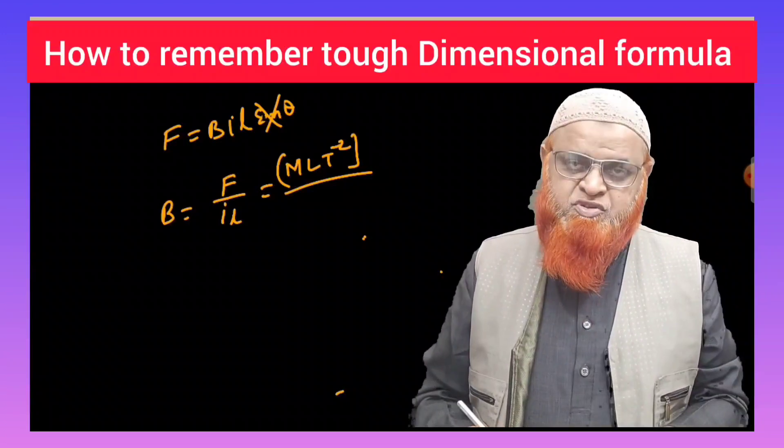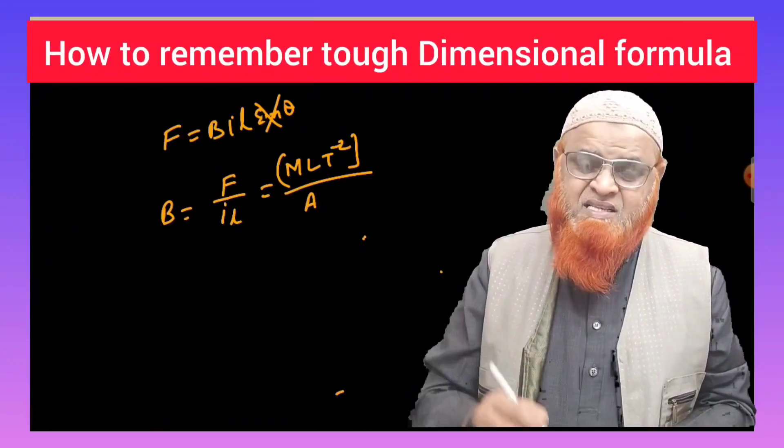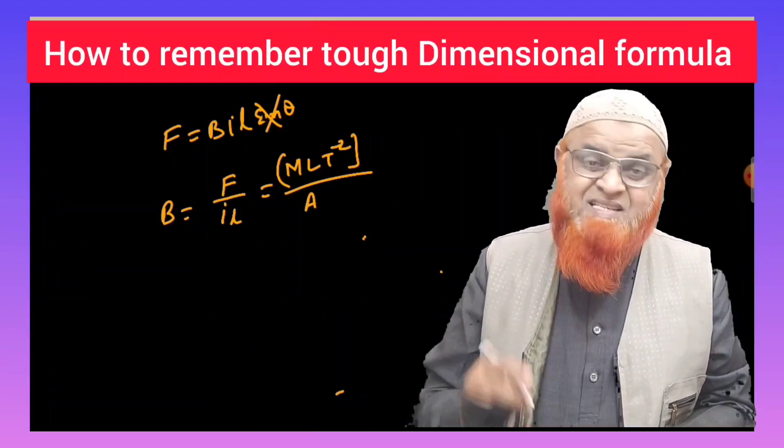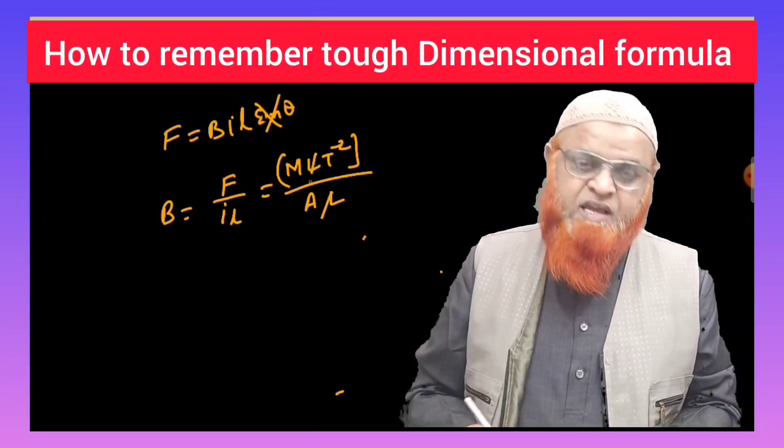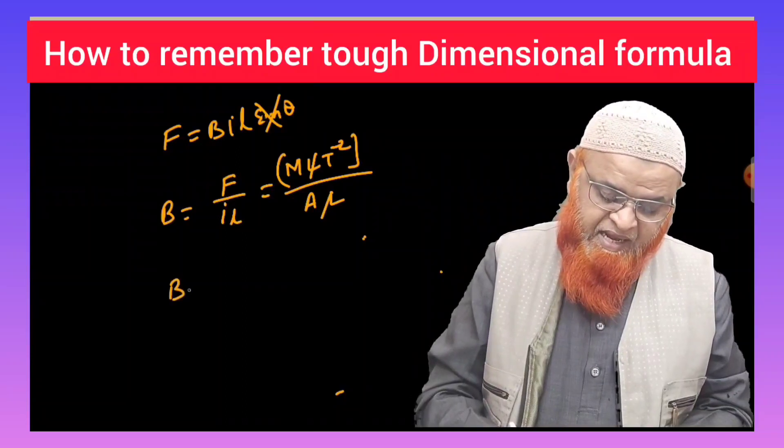Then in the denominator, if you observe, you are going to see I is current, which can be written as A (ampere), which is the dimensional symbol for current. And length is written as L here. Then after that, L gets cancelled.